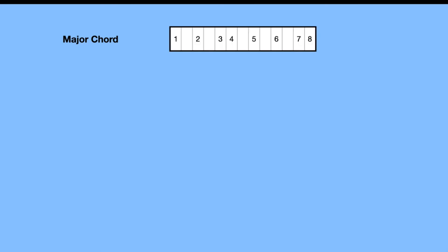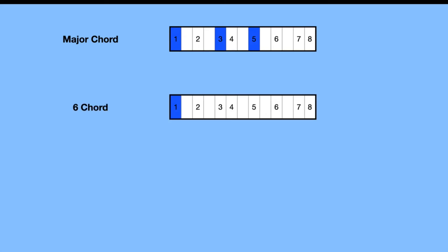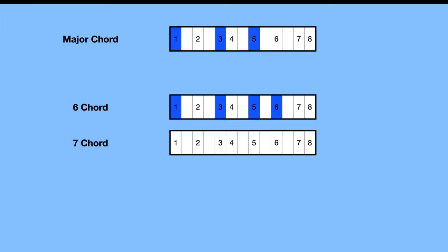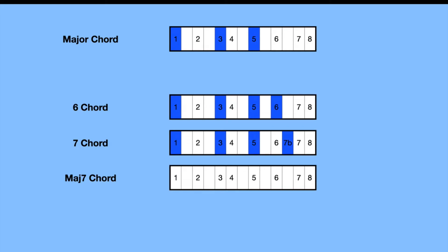We're going to look at how the actual positions on the fretboard are related. But first, a quick recap from a previous theory lesson. A major chord takes its notes from the eight notes of the major scale, and the formula is the one, the three, and the five. A sixth chord is the one, the three, the five, and the sixth. A seventh chord is the one, the three, the five, and a flattened seventh. And then a major seventh chord is the one, three, five, and the actual seventh.